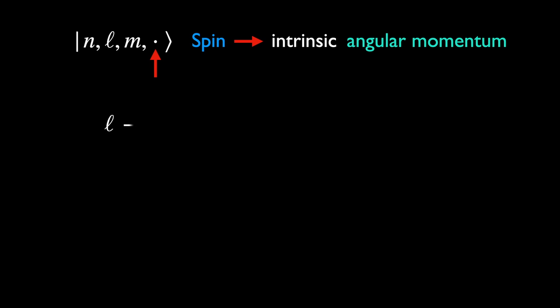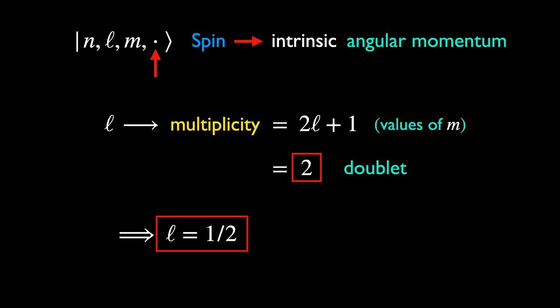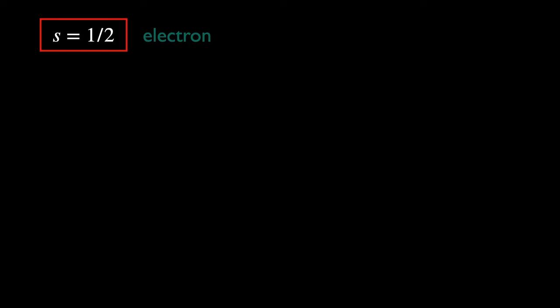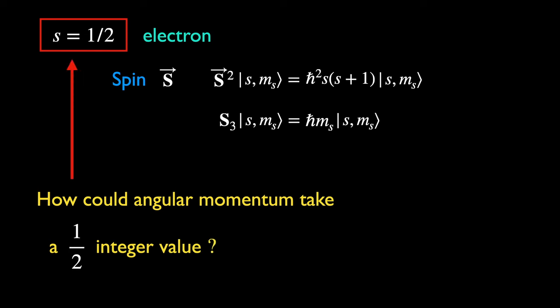Applying what we know about orbital angular momentum, in which the multiplicity of l is 2l plus 1 — to get a doublet, l would have to be one-half. Let's use the letter s for spin. Thus we say that an electron has spin one-half. In analogy to the orbital case, we expect shared eigenstates between the square and the third component of spin. An objection immediately arises: how could angular momentum be of half-integer value, since it can be shown that orbital angular momentum can only take integer values? It will turn out that if we extend the concept of angular momentum through the principles of symmetry, such values are also allowed.